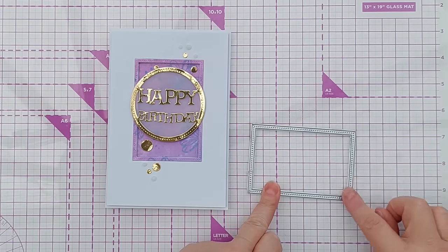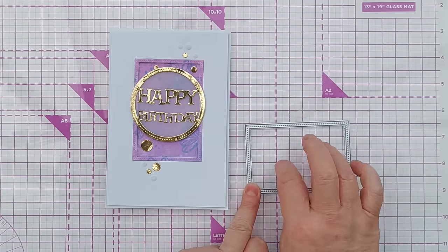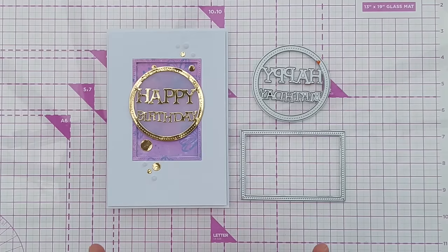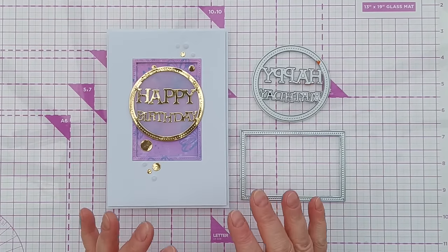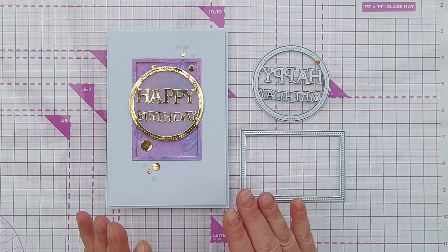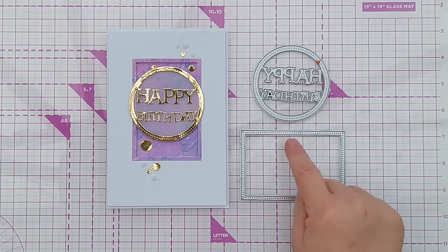The die cuts out the frame separately from the inner piece, but today I'm going to recreate this with some simpler dies that you've probably got in your stash already if you haven't got these.